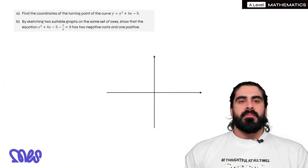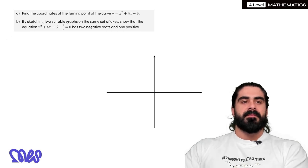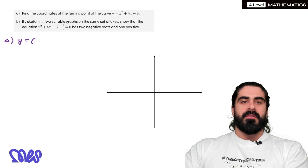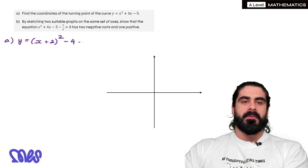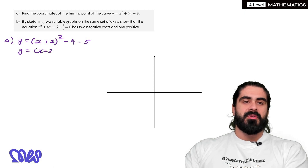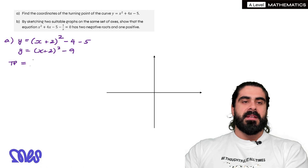Find the coordinates of the turning point of the curve y equals x squared plus 4x minus 5. We need to complete the square. We're going to half the coefficient of x, so it'll be 2 squared, then subtract 2 squared which is 4, and we have minus 5. So y equals x plus 2 all squared minus 9. The turning point is the negative of the number in the bracket, so minus 2 comma minus 9.